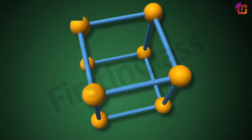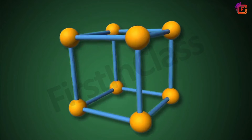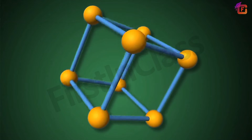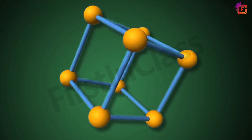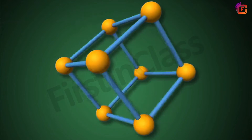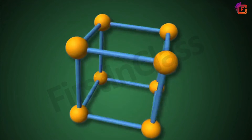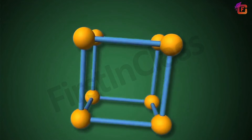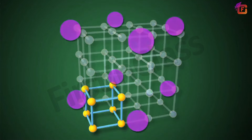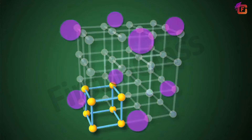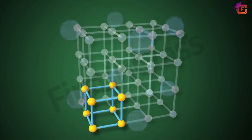Now, are all unit cells the same in a crystal lattice? Yes — all unit cells in a crystal lattice are the same. However, in different kinds of crystal lattices there may be different types of unit cells.